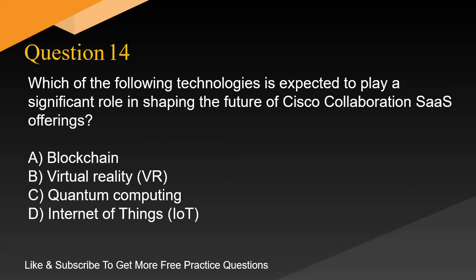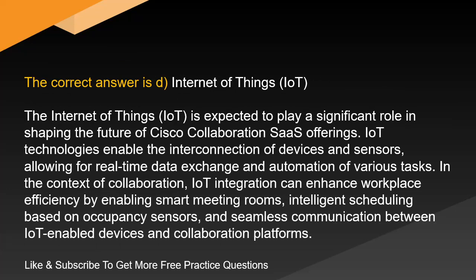Question 14. Which of the following technologies is expected to play a significant role in shaping the future of Cisco collaboration SaaS offerings? A. Blockchain. B. Virtual reality (VR). C. Quantum computing. D. Internet of Things (IoT). The correct answer is D. Internet of Things (IoT). IoT technologies enable the interconnection of devices and sensors, allowing for real-time data exchange and automation of various tasks. In the context of collaboration, IoT integration can enhance workplace efficiency by enabling smart meeting rooms, intelligent scheduling based on occupancy sensors, and seamless communication between IoT-enabled devices and collaboration platforms.